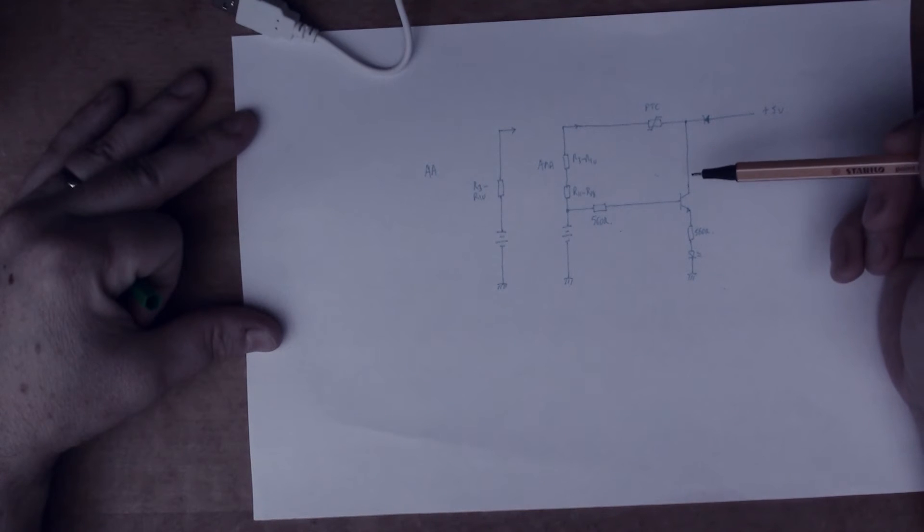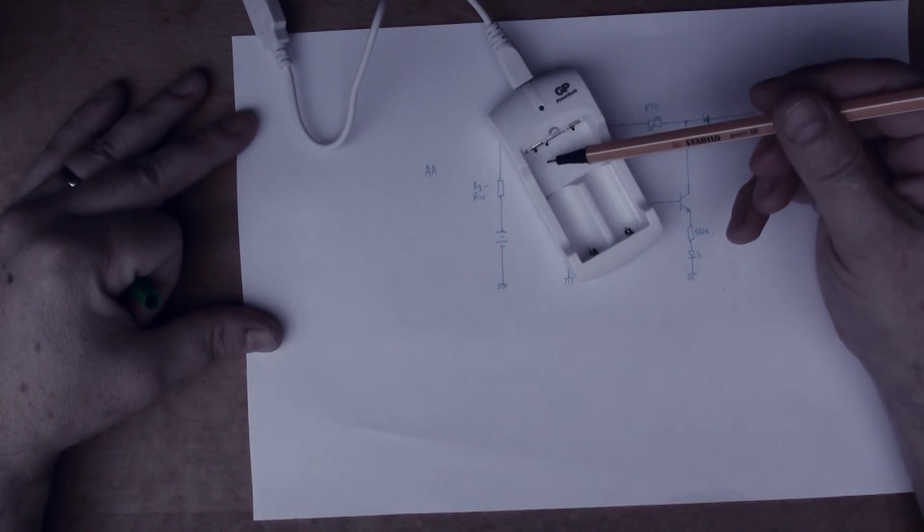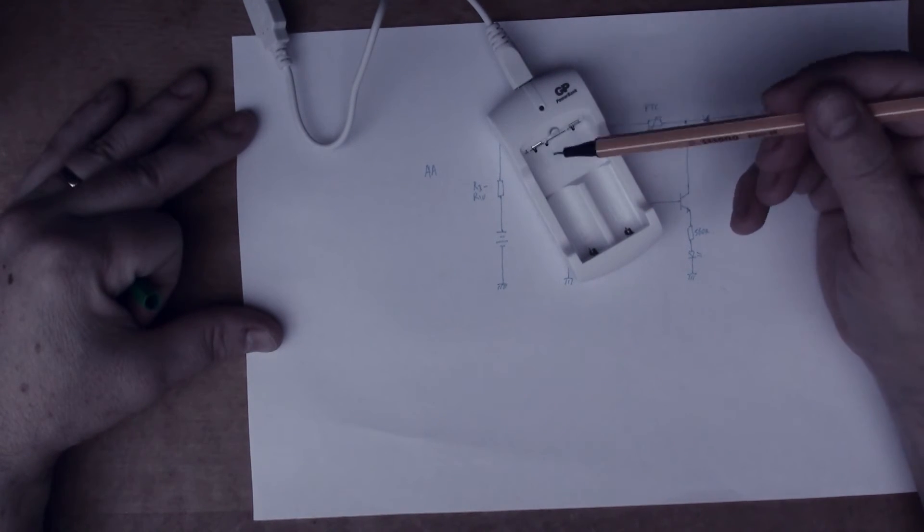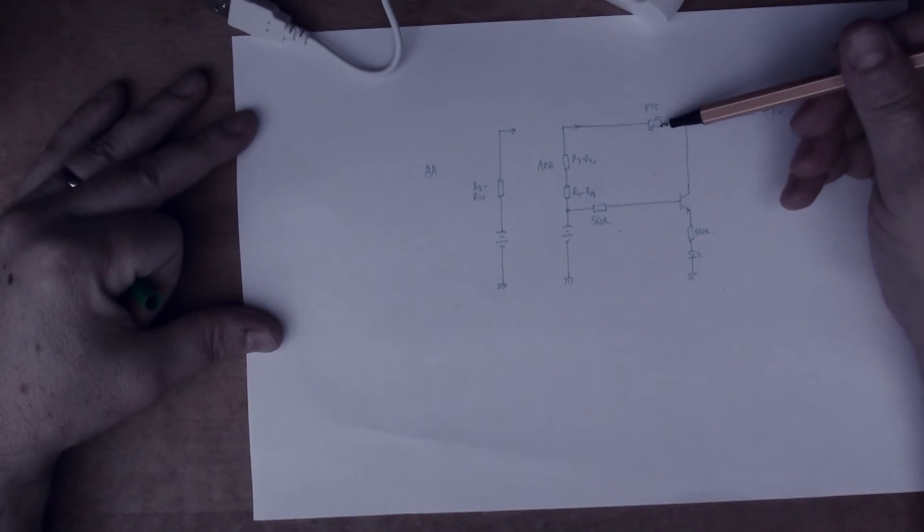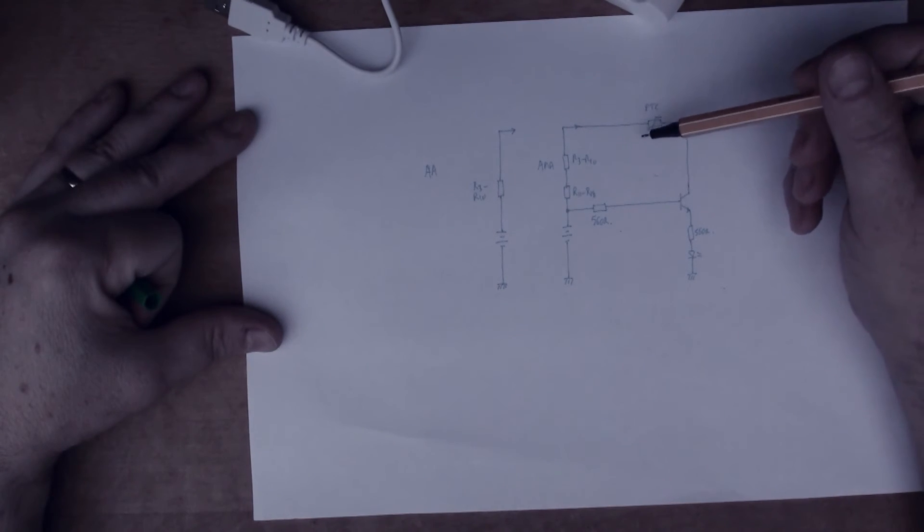that the cell is now charged. Also, I guess with the PTC here, this PTC is physically mounted somewhere near the top of the cell, so if the cell gets hot during charging, then the resistance of the PTC will go up and the current going down this branch will reduce. So you can see also if there's a reduced current going down here, this could also make the LED go off.